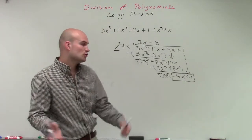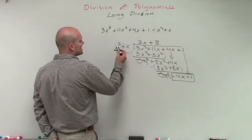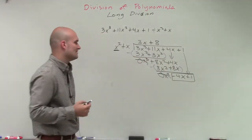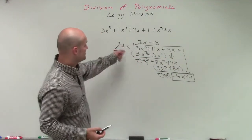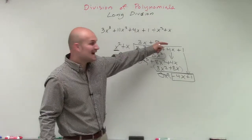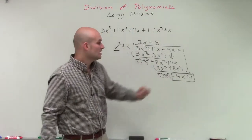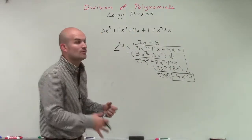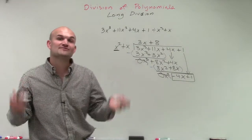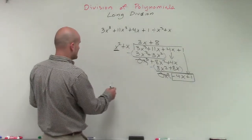So how we write our quotient is we know that so far, x squared plus x divides into 3x cubed plus 11x squared plus 4x plus 1 divides into it 3x plus 8 times with a remainder of negative 4x plus 1. And what we do with the remainder is we take that remainder and we divide it by our divisor. So here's our final answer.